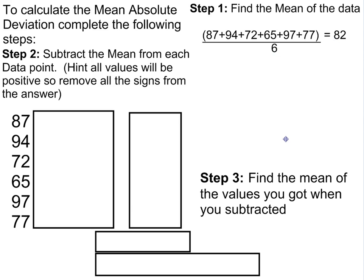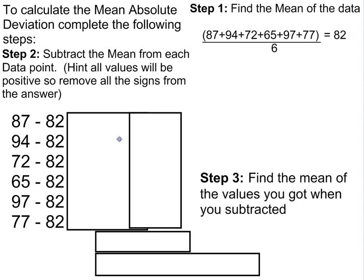The second step is to subtract that mean from each data point. Now, since the format is mean absolute deviation, we just want to figure out how far it is away from that number. It doesn't matter if it's positive or negative. So a quick hint is just to remove all the signs from the answer so they're all going to be positive.